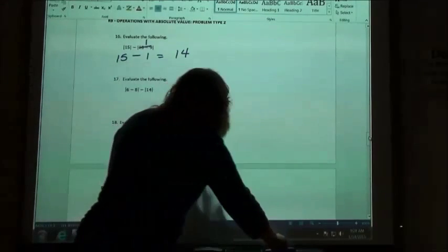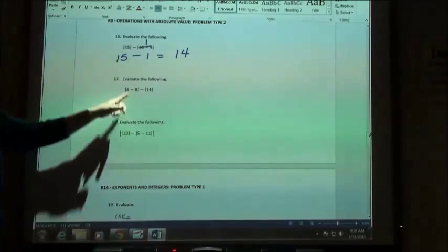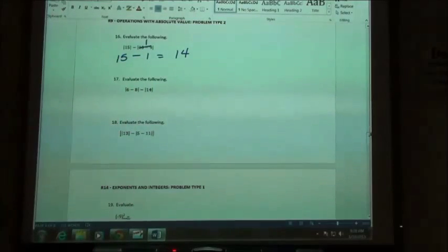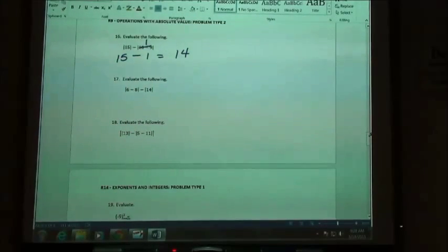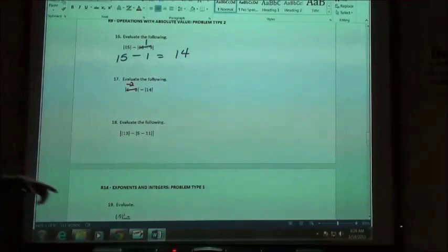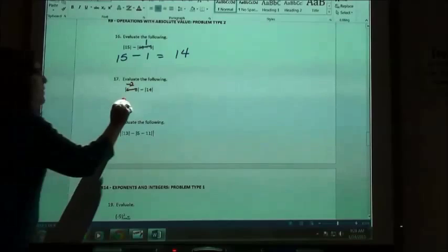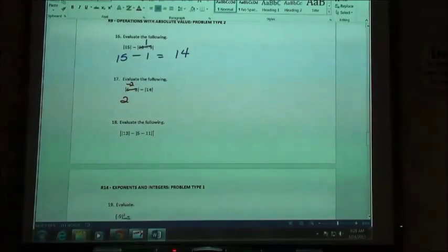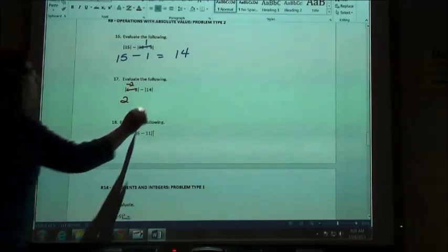So if I'm going to do number 17, again I want to start and simplify inside the absolute values. 6 minus 8 would be negative 2. I'm then going to do my absolute values. The absolute value of negative 2 is 2. The absolute value of 14 is? 14. Still 14.